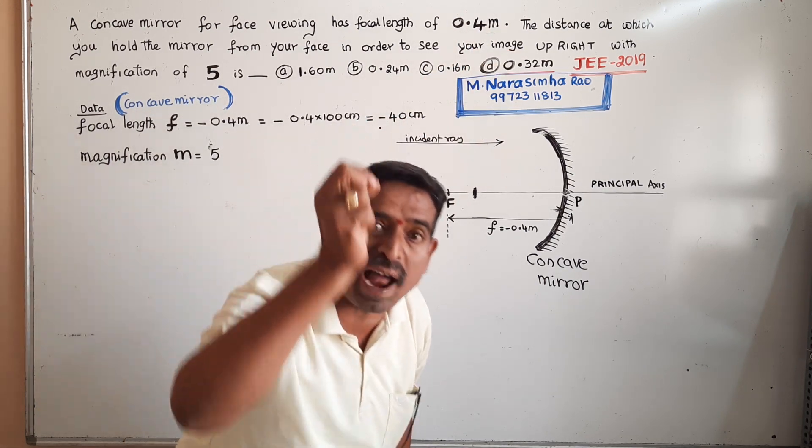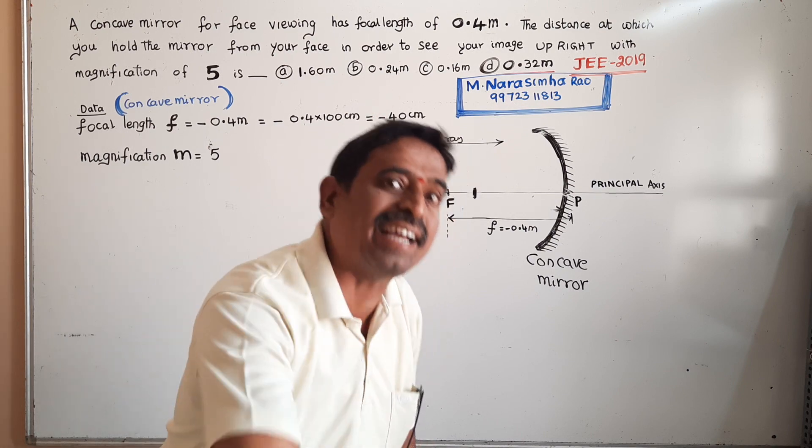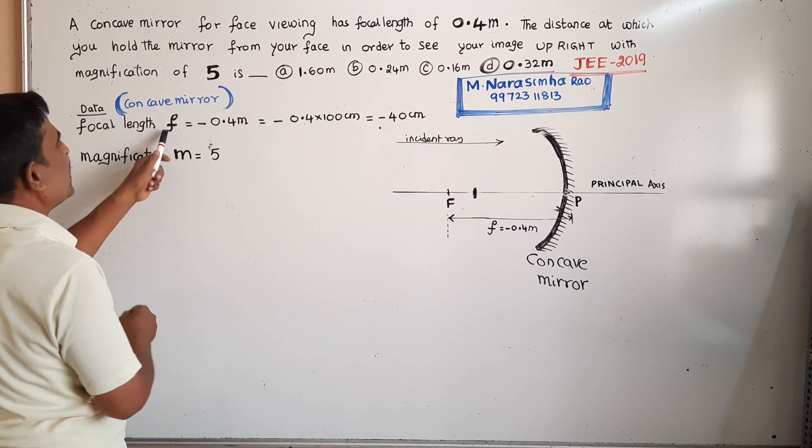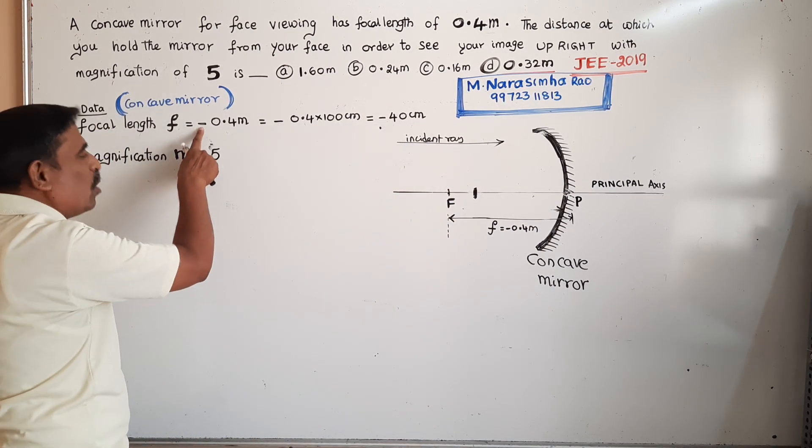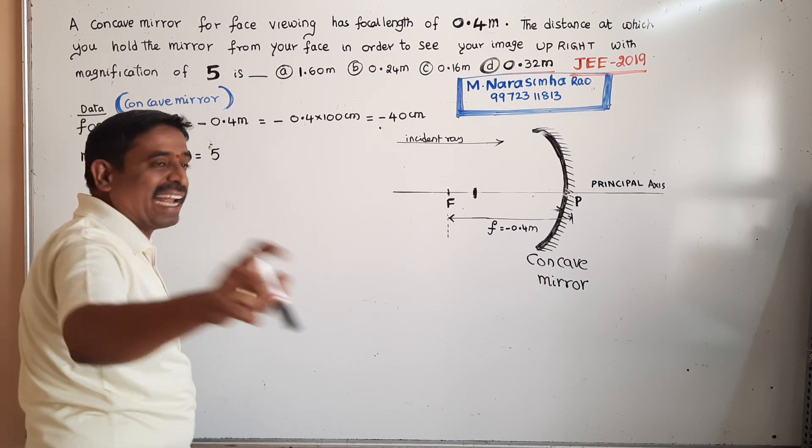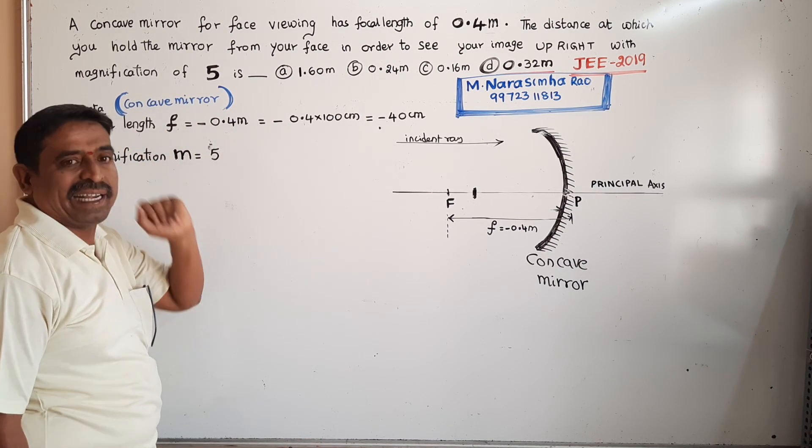In the case of a concave mirror, according to the sign convention, the focal length f is negative. So f equals minus 0.4 meters.